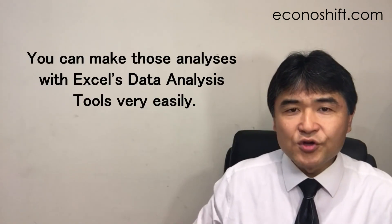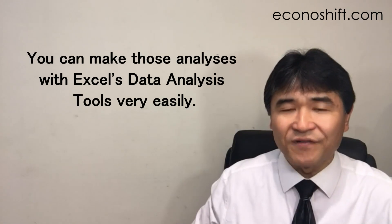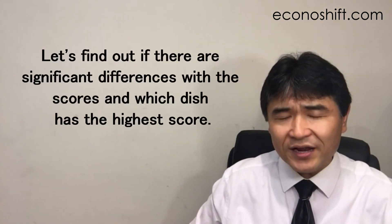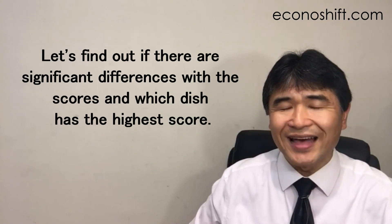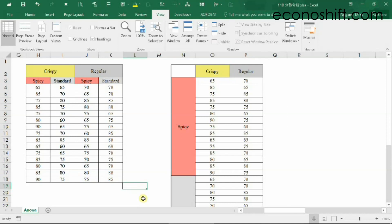You can make those analyses with Excel's data analysis tools very easily. We'll conduct the two factor ANOVA using the fried chicken data. Among the four prototype dishes, let's find out if there are significant differences with the scores, and which dish has the highest score.